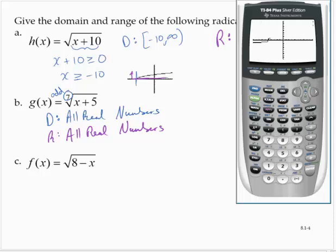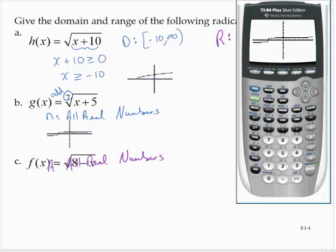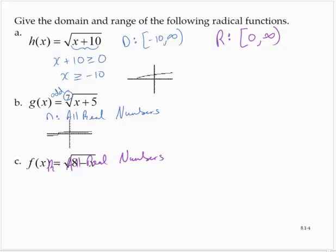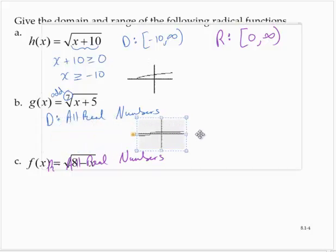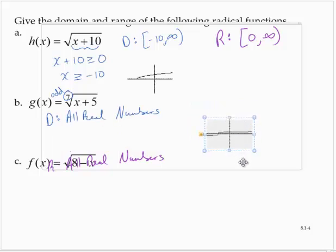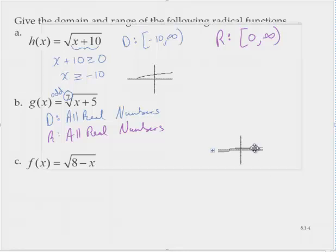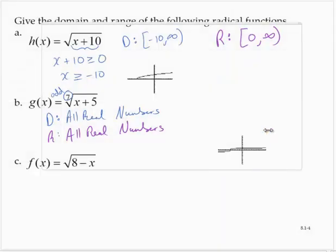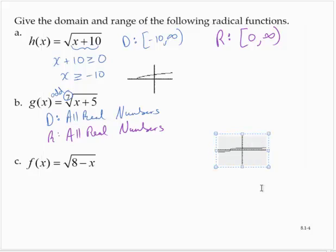And graphing that, I'll go back to the standard window by hitting zoom 6. And what I see in this graph is that it continues on from left to right and from bottom to top.